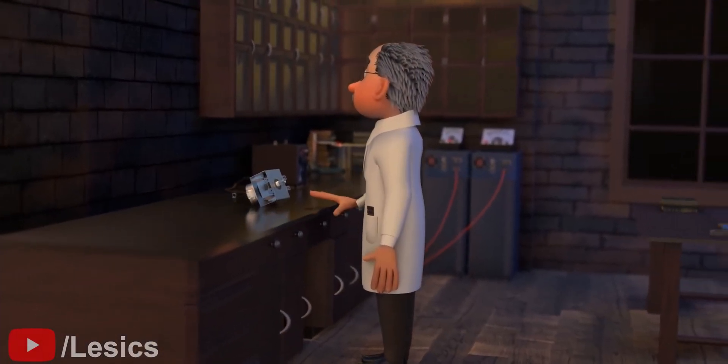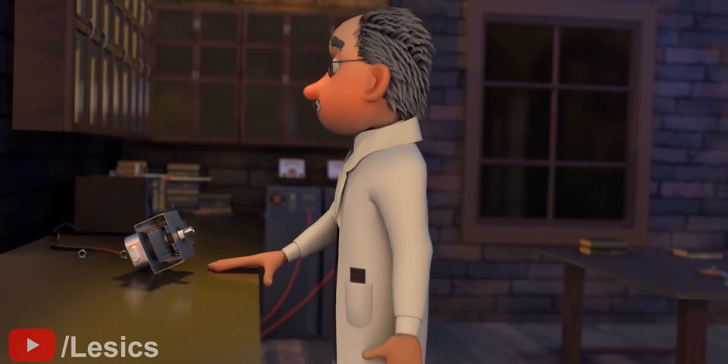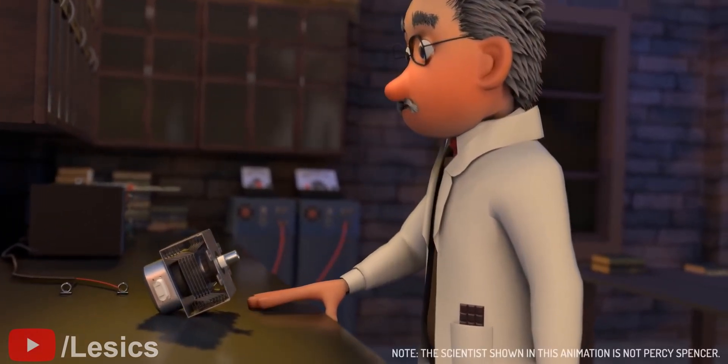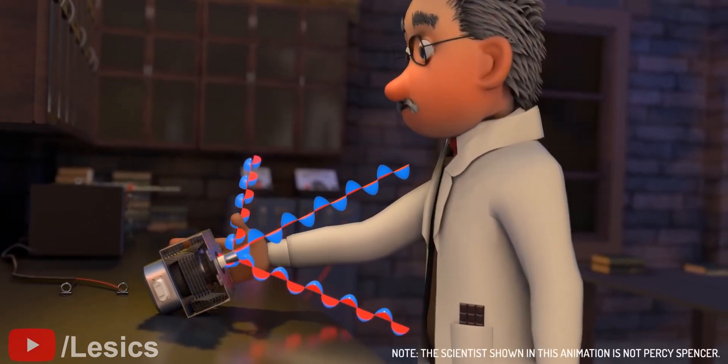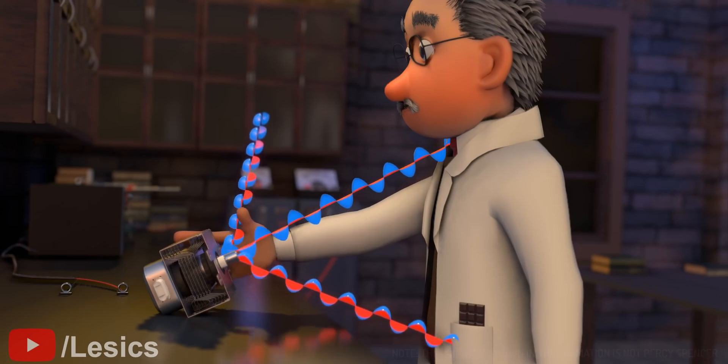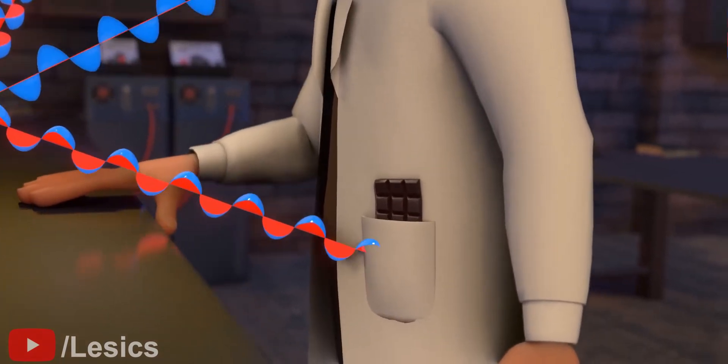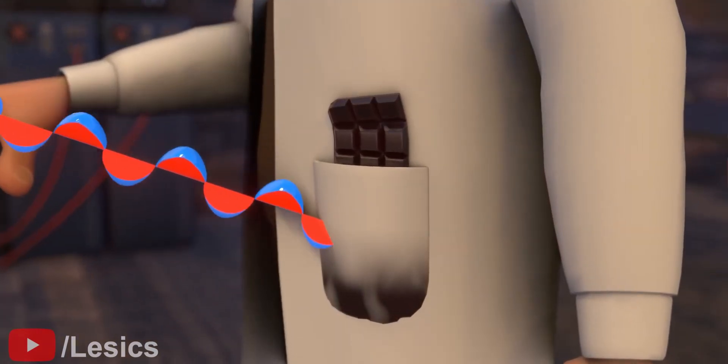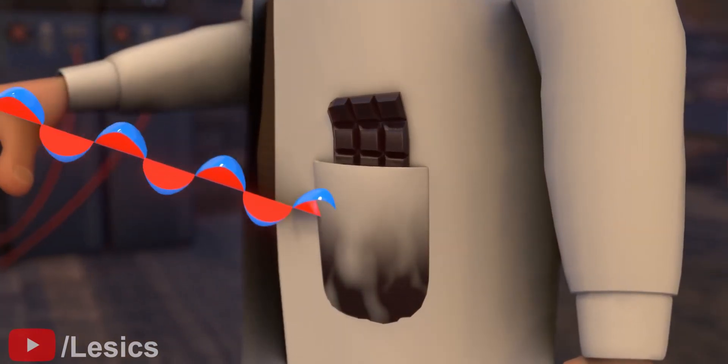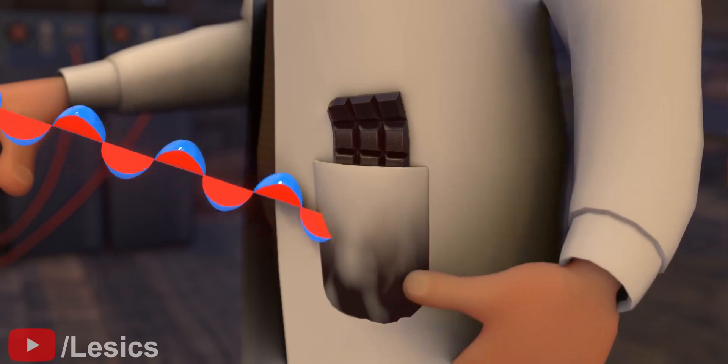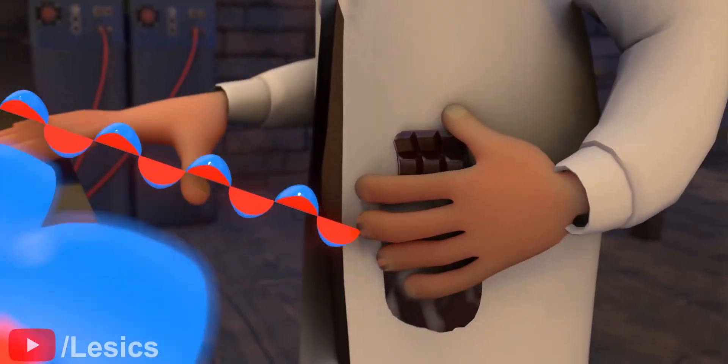It may amaze you to learn that the invention of the microwave oven was accidental. The scientist, Percy Spencer, was performing experiments on a device called a magnetron. Magnetrons generate powerful microwave radiation. During the experiment, he observed that the candy bar in his pocket was completely melted. That's when it occurred to him to explore the applications of microwaves in cooking food.